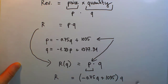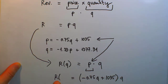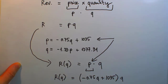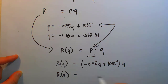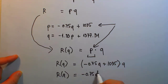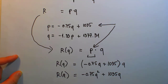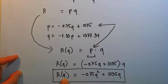This entire expression is now entirely in terms of Q. We can distribute that common factor Q on the right-hand side. Combining like terms, the function becomes: R(Q) = −0.75Q² + 1035Q. We have successfully expressed revenue as a function of quantity Q.